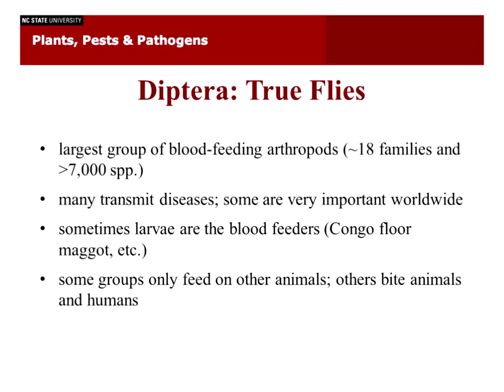The most common group of blood-feeding arthropods are the Diptera — true flies. There are over 7,000 species that feed on blood in the world across about 18 families. Blood feeding has originated at least 12 times in flies, so they're very successful blood feeders. This also means that many of them transmit diseases, and some are very important worldwide — for instance, malaria is a very common killer of people.